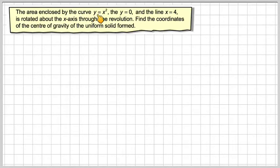The area enclosed by the curve y equals x squared, y equals 0 (which is the x-axis), and the line x equals 4 is rotated about the x-axis through one revolution. Find the coordinates of the center of gravity of the uniform solid formed.